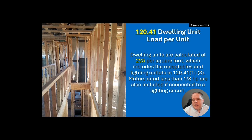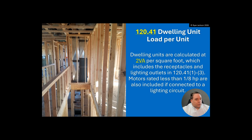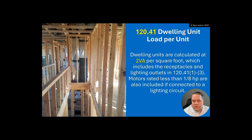Dwelling units are now calculated at two volt-amps per square foot — it's been three VA for decades, probably 50 to 70 years. That two VA per square foot includes your receptacles and your lighting outlets under 120.41 items one through three. Motors rated less than one-eighth horsepower are also included if connected to a lighting circuit.